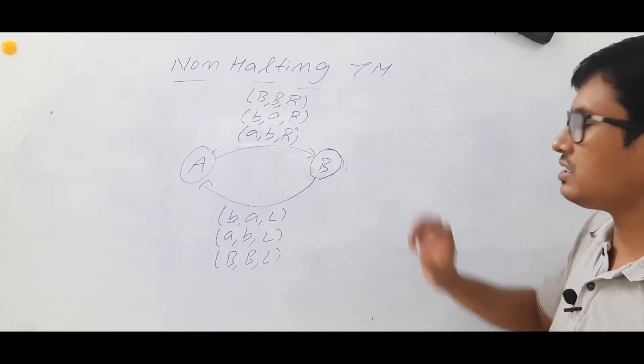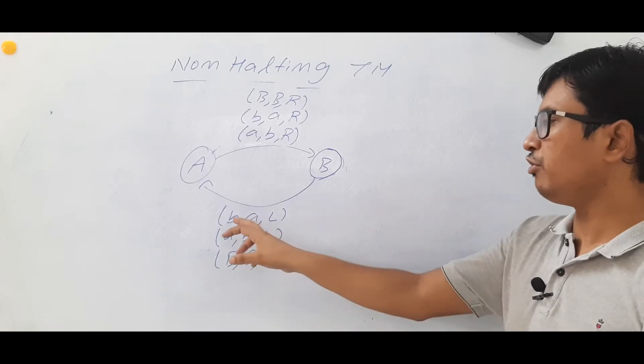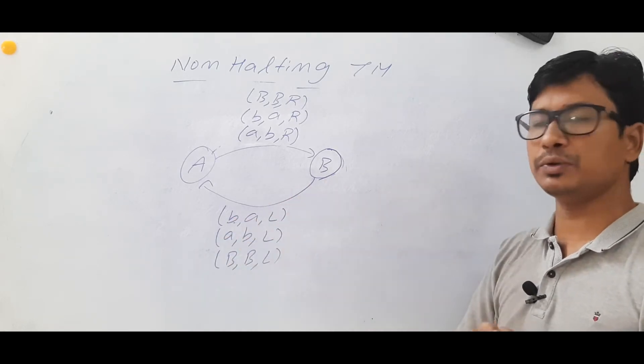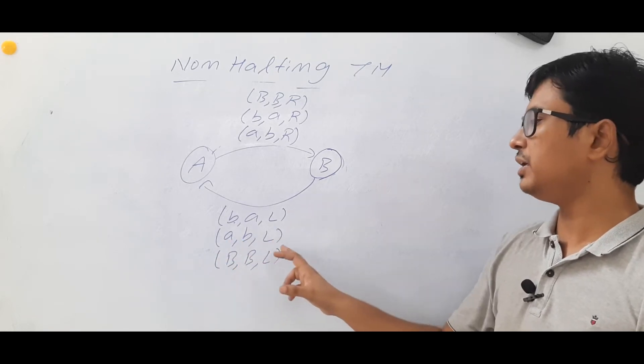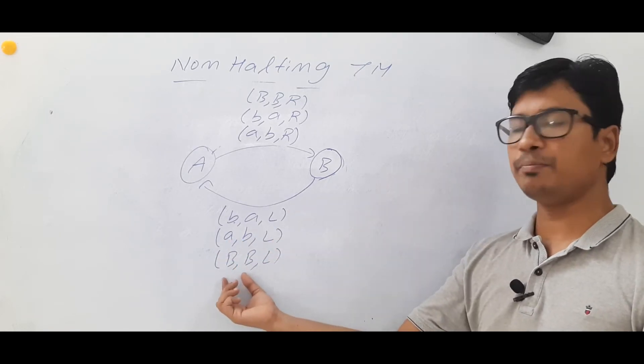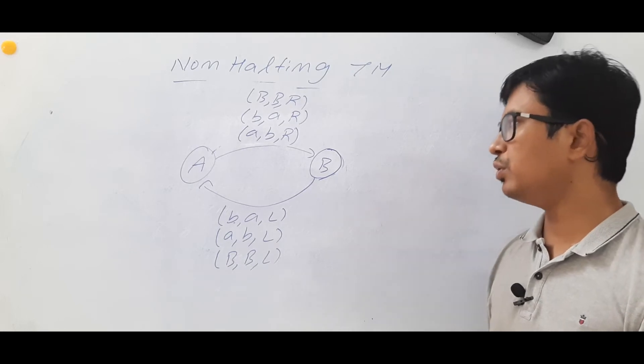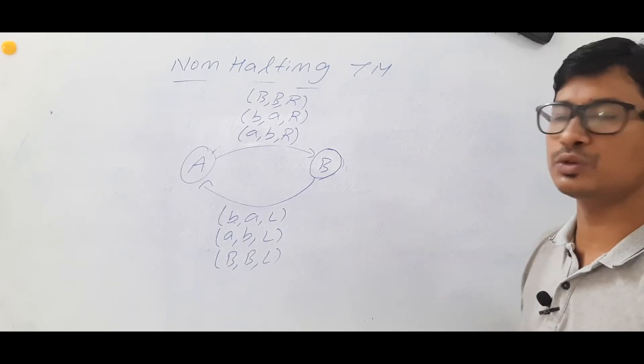What state B is doing: if you find a B, you modify it to A and move to the left. If you find A, modify it to B and move to the left. If you find a blank, make it as a blank and move to the left.